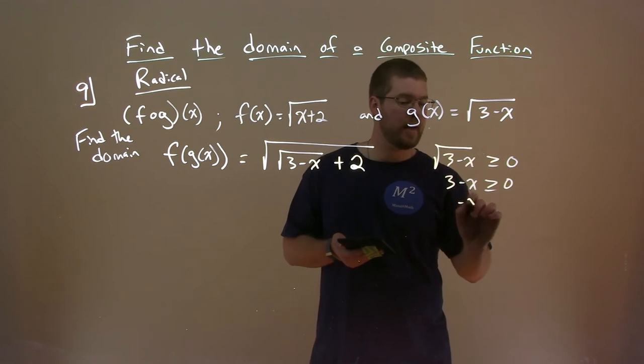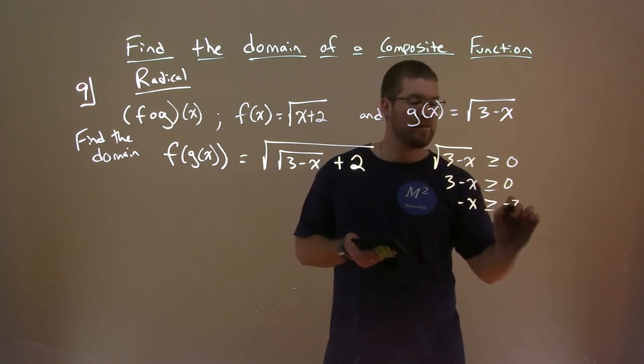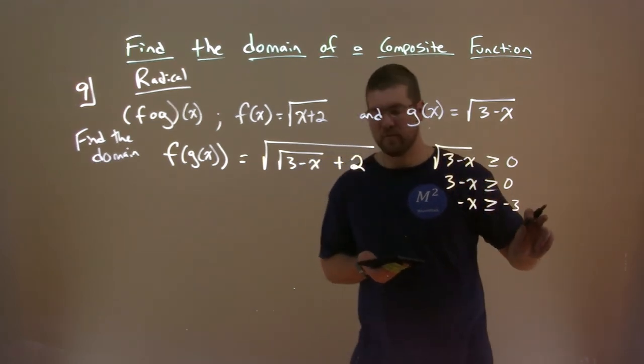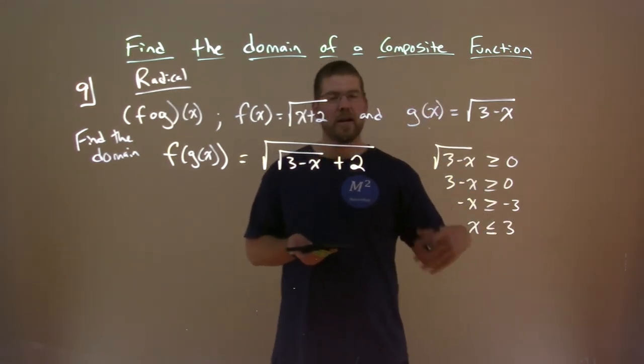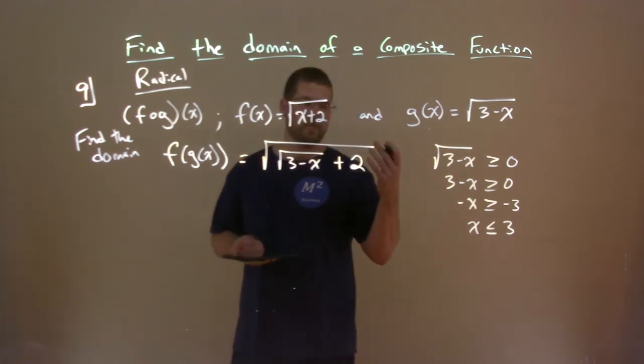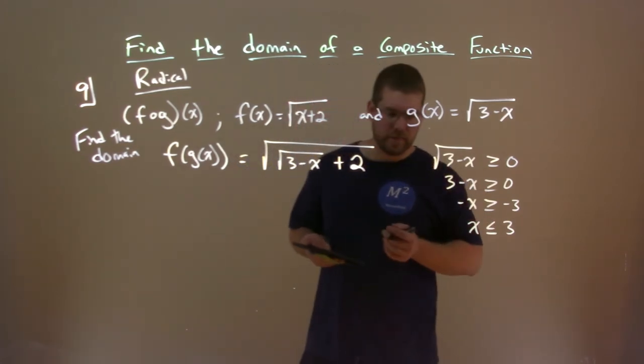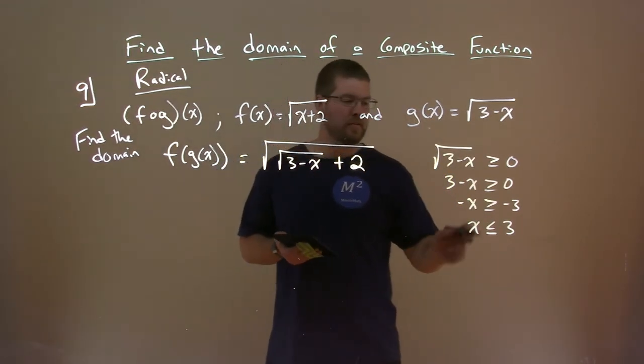Subtract 3 from both sides. Minus x is greater than or equal to negative 3. Divide both sides by a negative 1. And x is less than or equal to a positive 3. Remember, dividing an inequality by a negative number flips the inequality.